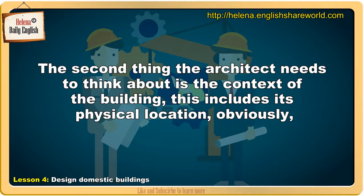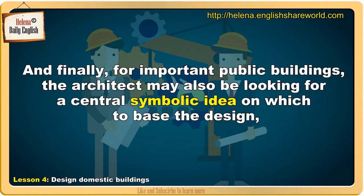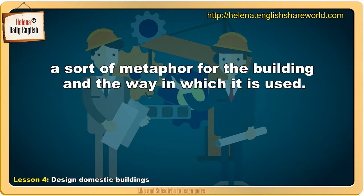The second thing the architect needs to think about is the context of the building. This includes its physical location, obviously, but it also includes the social meaning of the building — how it relates to the people it's built for. And finally, for important public buildings, the architect may also be looking for a central symbolic idea on which to base the design, a sort of metaphor for the building and the way in which it is used.